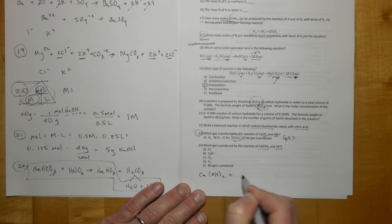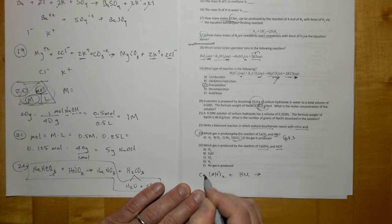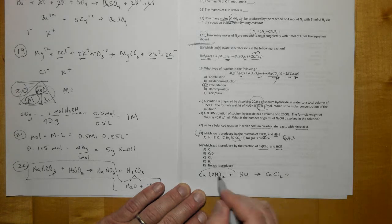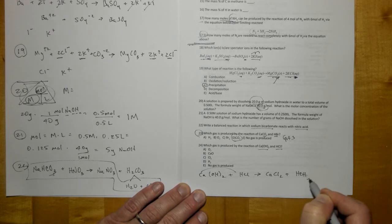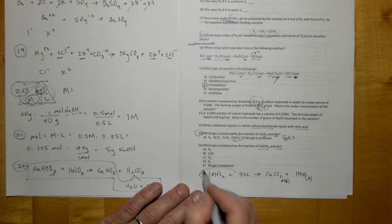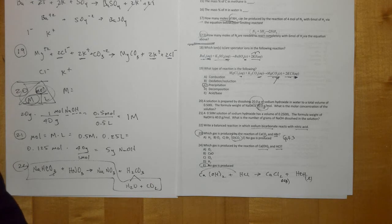And which gas is produced with Ca(OH)₂ and HCl? Let's write that reaction quick. Ca(OH)₂ and HCl, swap the cations, we get CaCl₂ and then we get some H with some OH right here. That's going to be a liquid at room temperature and this is going to be aqueous. So it looks like no gas is produced in number 23.